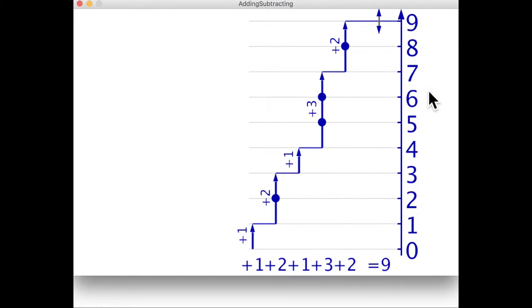By convention number lines are shown horizontally with negative to the left and positive to the right but it is rotated here to allow the equation to be shown with the steps in line with the arrows.